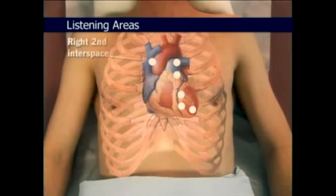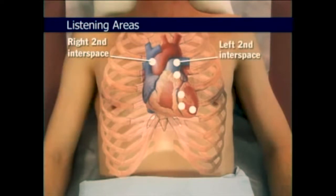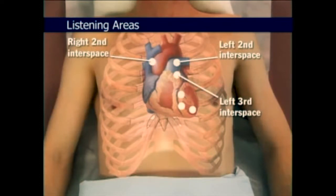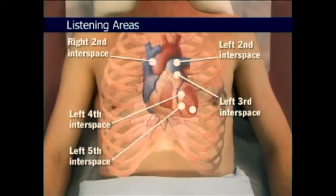In the aortic area, in the right second interspace close to the sternum. In the pulmonic area, in the left second interspace close to the sternum. In the left third interspace. In the tricuspid area, in the left fourth and left fifth interspaces. And in the mitral area, at the apex.